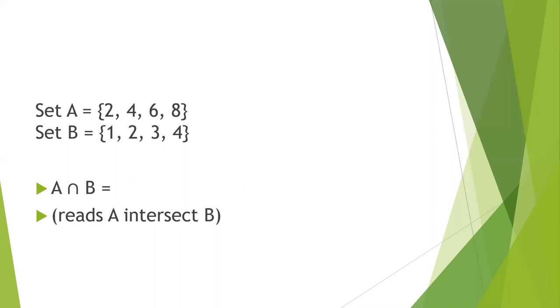Now, a different set operation would be intersection. A intersect B. So that means we're looking for what these two sets have in common. So they both have a 2. And they both have a 4. And that's the only thing that they share. So think about the word share or overlap when you look at intersection. So A intersect B is just 2 and 4. We always use the curly brackets. And we always put a comma between each element.